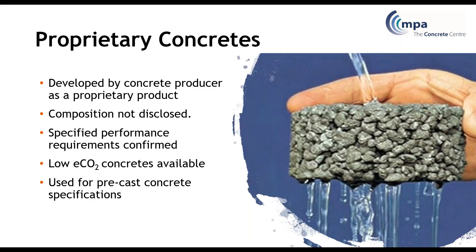Then there are a range of proprietary concretes offered by concrete producers — have a look on their websites. They provide all sorts of different proprietary concretes with certain properties: you can have low embodied carbon concretes, porous concrete as shown in this picture, coloured concretes, and all sorts of different things giving certain performance or properties. They don't tell you what's in it — they just tell you what it will do. It's worth looking at proprietary concretes for things like self-compacting concrete or coloured concrete.